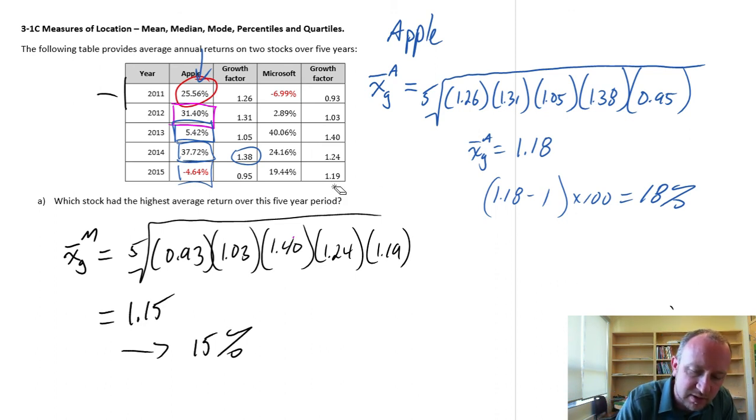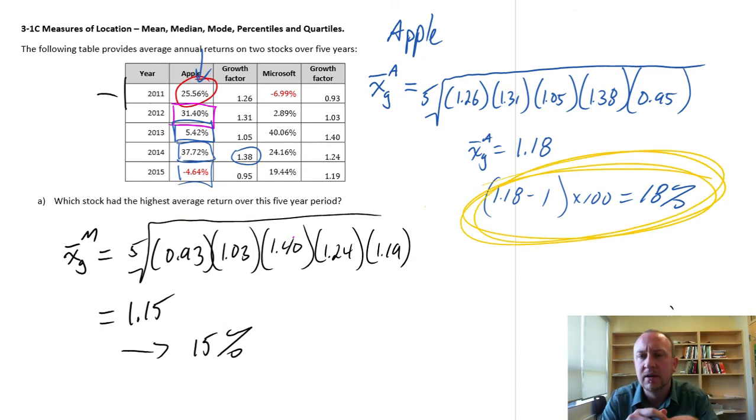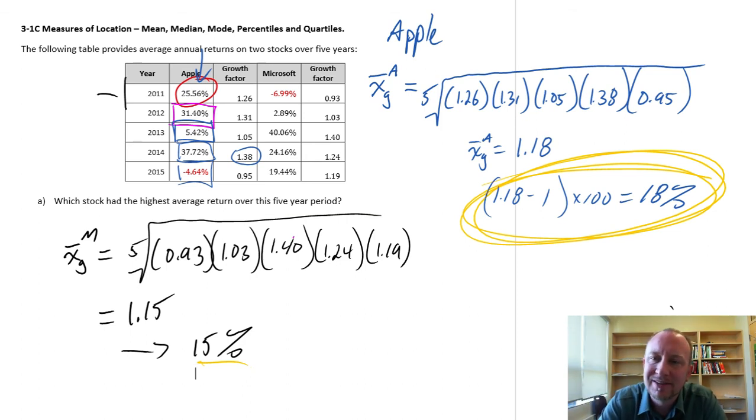So to answer this question, which stock had the highest average return over this 5 year period, looks to me like Apple is the winner. 18% over the 5 years versus Microsoft's 15%. So I hope that helps with the geometric mean. The calculations can be a little bit tedious. The trick here is really understanding when it's appropriate to do an arithmetic mean versus when it's appropriate to do the geometric mean. That will come with practice. The big difference here is geometric mean, we're multiplying our values together as opposed to adding them together. So I hope this helps. Thank you for watching.